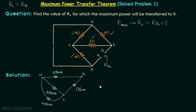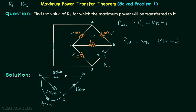Now we will find out the equivalent resistance between A and B, which is RTH. You can see we have two resistors in parallel: 4 ohms in parallel with 4 ohms. And then this combination is in series with the 1 ohm resistor, so we add 1. After this, this combination is in parallel with the 6 ohm resistor.